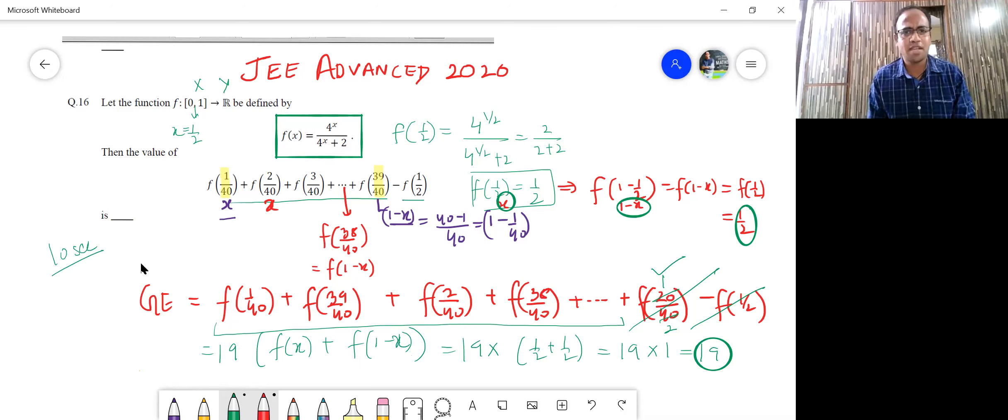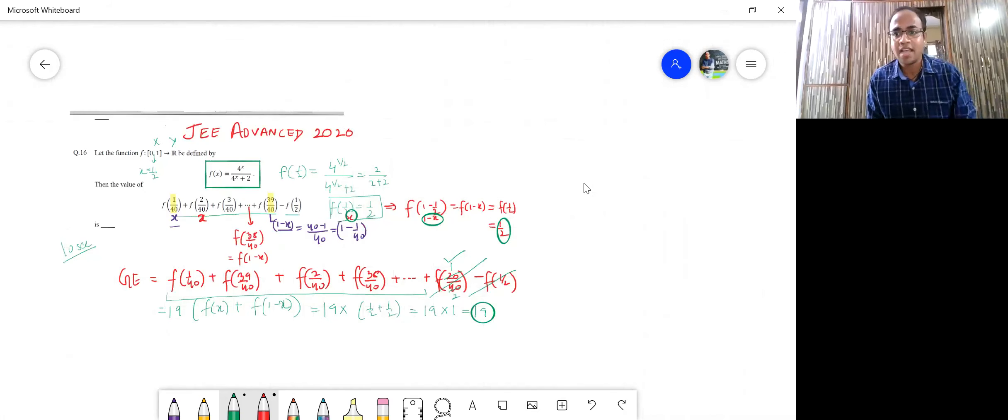The proof is very simple. I can calculate both the values, that is f(x) and f(1-x). f(x) is nothing but 4 raised to x upon 4 raised to x plus 2. And similarly, I can see f(1-x) would be 4 raised to 1-x upon 4 raised to 1-x plus 2. If I add them up, what will happen? Let's check out.